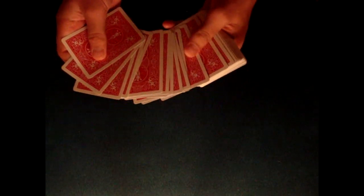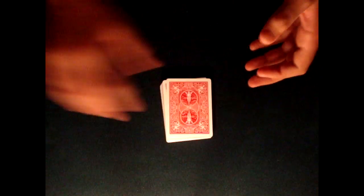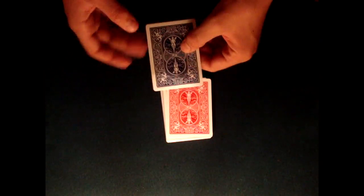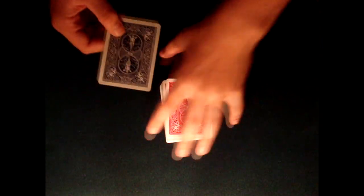All the backs are the same, there's no specific order. Now off to the left of me is actually my prediction card, and as you can see it is blue-backed, meaning it is odd from the red deck.